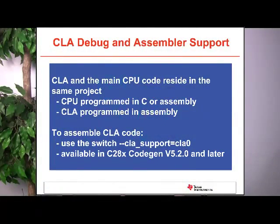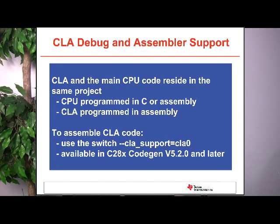On the next slide, I'd like to talk about debug and assembler support for the CLA. The CLA and main CPU code can reside in the same project. The assembler recognizes CLA code through its own mnemonic set. Typically, your CPU code handles all system initialization and is programmed in C or C++, while the CLA is fully programmable in assembly. To assemble CLA code, you must use the CLA support switch, which is available in CodeGen 5.2 and later.